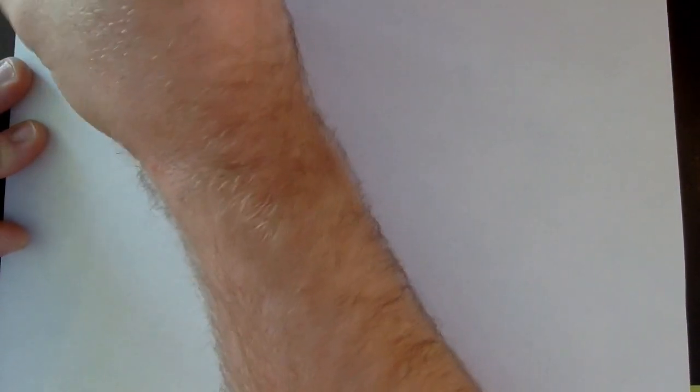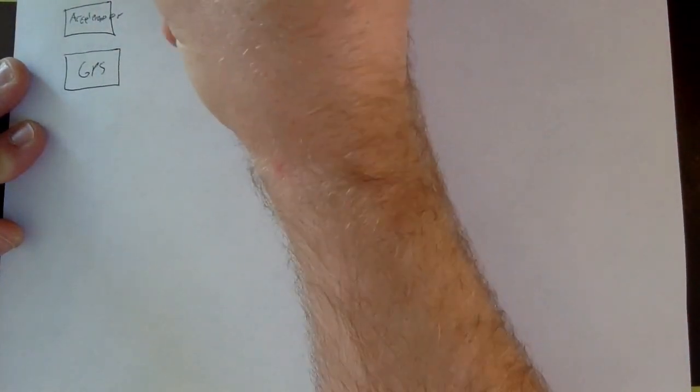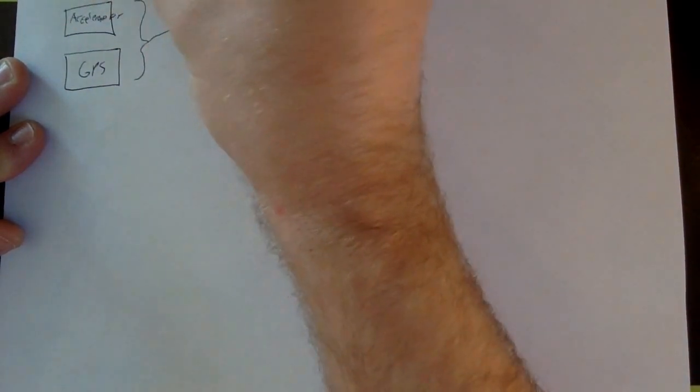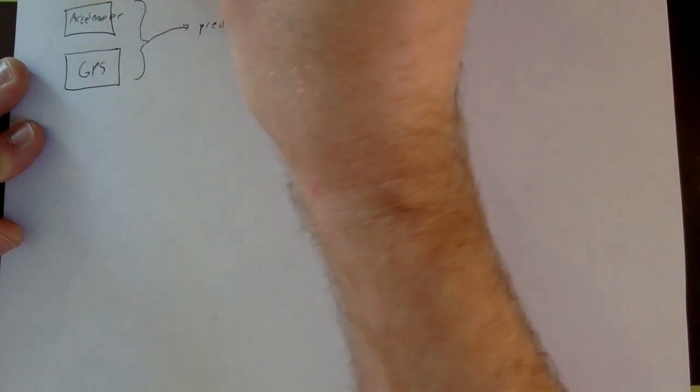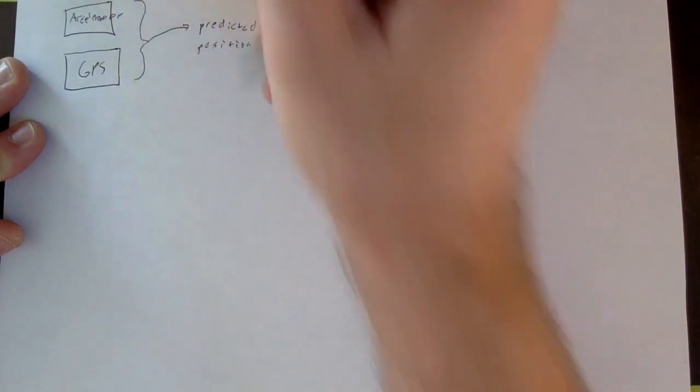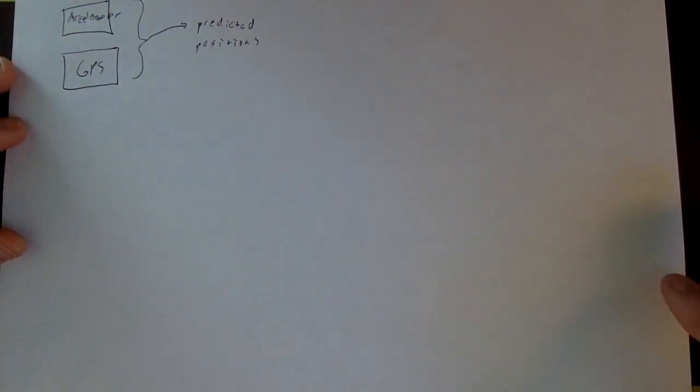So I'll just write these down. If I have an accelerometer and a GPS, then what we're going to do is take these inputs and output predicted positions. The value of this is twofold: I can get predicted positions at a dramatically higher frequency than I would otherwise be able to get with a raw GPS signal, and using the accelerometer I can get much better GPS readings. GPS readings are going to be on average accurate, but there's a standard deviation, so you can use the accelerometer to correct those values.